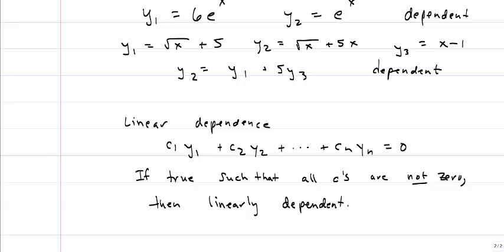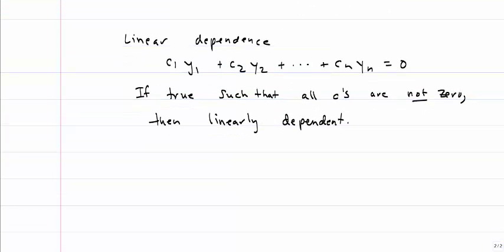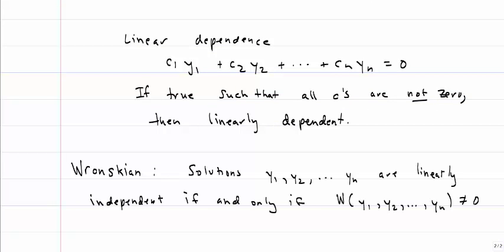That doesn't seem to help me too much, except now I'm going to turn to a tool called the Wronskian. And before I tell you what the Wronskian is, I'm going to tell you how we're going to use it. Solutions y1 through yn are linearly independent if and only if the Wronskian of all those solutions is not equal to zero.